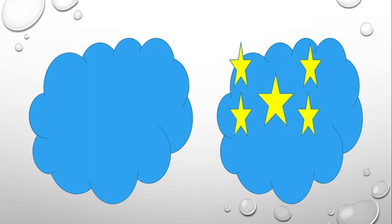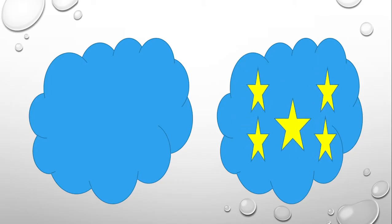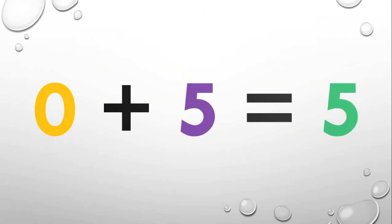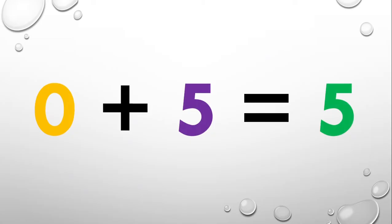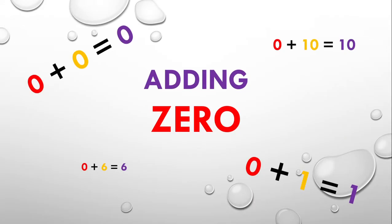And five stars on the second cloud — let's count them: one, two, three, four, five. Let's add them all together: that is a total of five. So that means that zero plus five equals five.